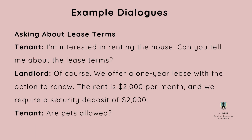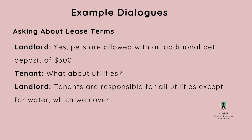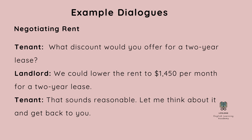Here is a second dialogue about lease terms. I'm interested in renting the house. Can you tell me about the lease terms? Of course. We offer a one-year lease with the option to renew. The rent is $2,000 per month, and we require a security deposit of $2,000. Are pets allowed? Yes. Pets are allowed with an additional pet deposit of $300. What about utilities? Tenants are responsible for all utilities except for water, which we cover. You may want to negotiate your rent. What discount would you offer for a two-year lease? We could lower the rent to $1,450 per month for a two-year lease. That sounds reasonable. Let me think about it and get back to you.